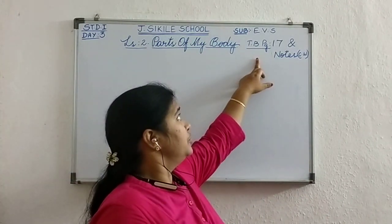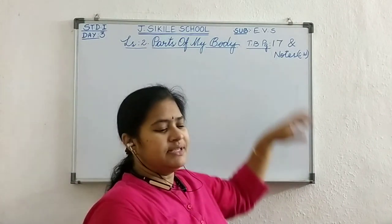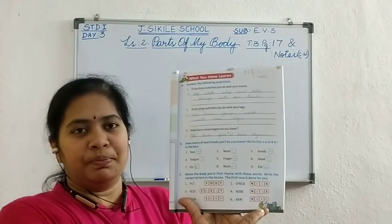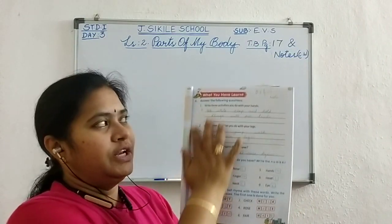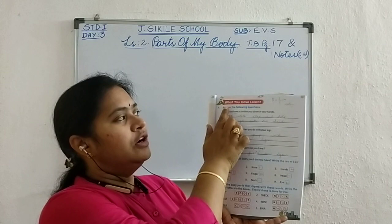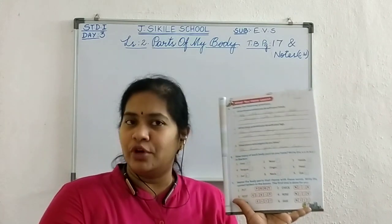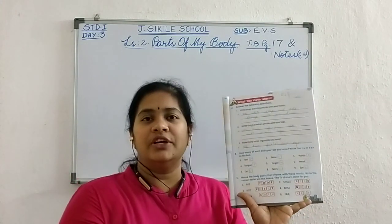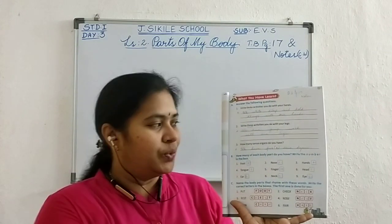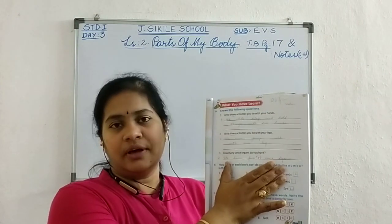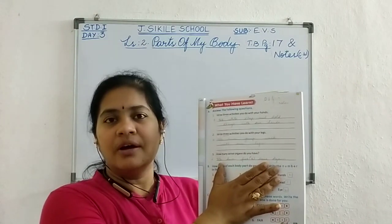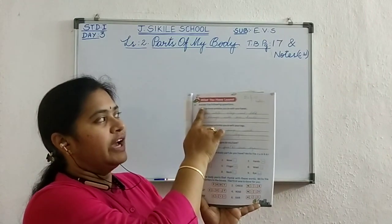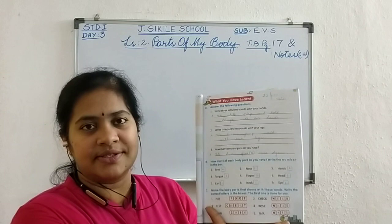Today, I told you page number 17. Open all of your textbooks to page 17. Here, what you have learned already — so for EVS, we don't have the CW. We can copy down everything in the textbook itself. So here we have to answer the following questions.